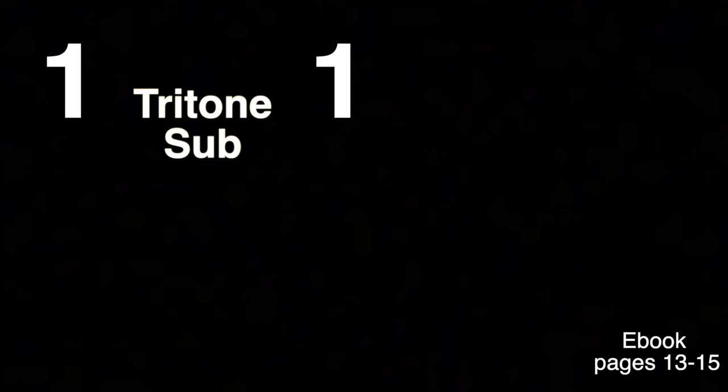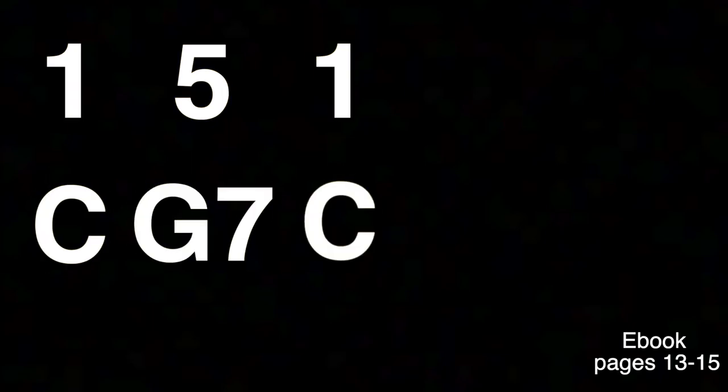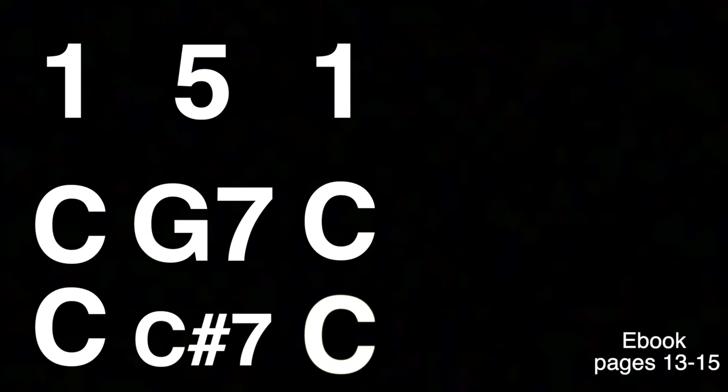There's also something called a tritone substitution. The rule states that we can replace the dominant 7 chord with a dominant 7 chord a tritone away. For example, 1-5-1 is C, G7, C. If we apply a tritone substitution, the progression becomes C, C-sharp 7, back to C — we're simply replacing the 5 dominant 7 chord with a dominant 7 chord one half step away from the 1 chord. Since a 2-5-1 is just an expansion of a 1-5-1, we can apply a tritone substitution: C, D minor 7, G7, C becomes C, D minor 7, C-sharp 7, C.